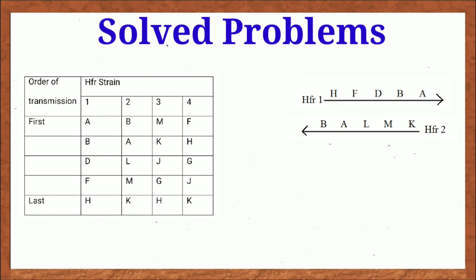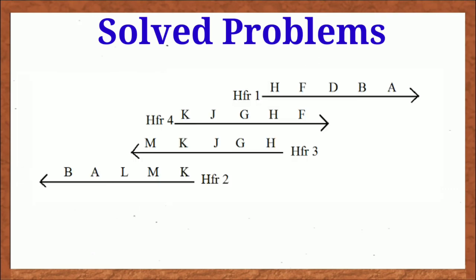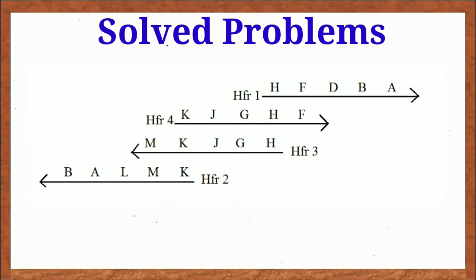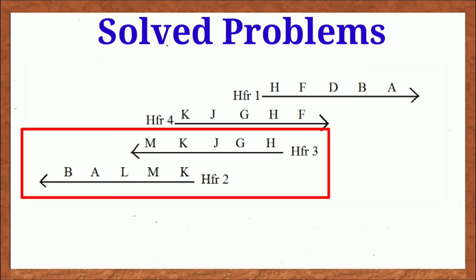In this way, I have drawn the order of gene transfer in HFR2, 3 and 4. Then I have aligned them in this way. Notice that in order to fit properly, I have to invert both HFR2 and HFR3, but I don't rearrange the gene order.